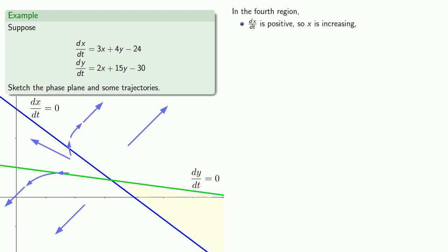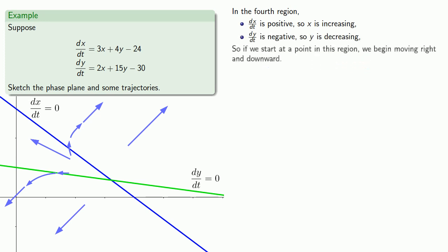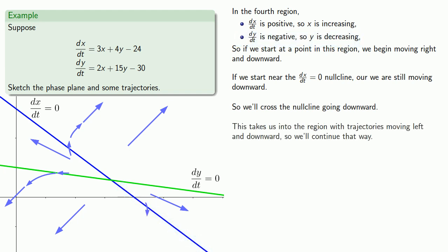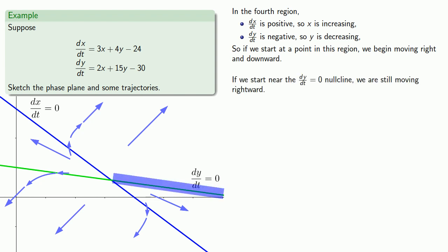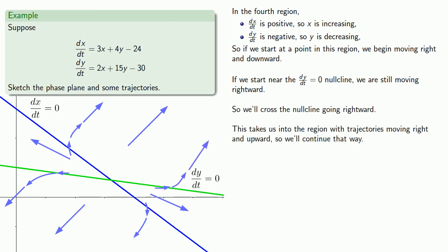In the fourth region, dx/dt is positive so x is increasing, and dy/dt is negative so y is decreasing. If we start at a point in this region, we begin moving right and downward. If we start near the dx/dt equals zero null cline, we're still moving downward, cross the null cline going downward, and continue left and downward. If we start near the dy/dt equals zero null cline, we're still moving rightward, cross it going rightward, and continue right and upward.